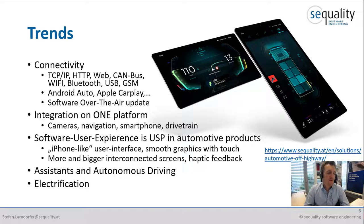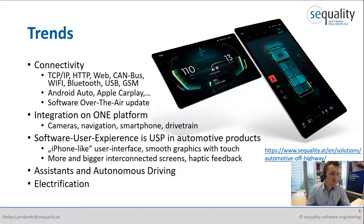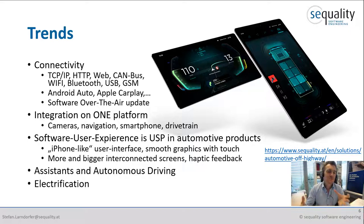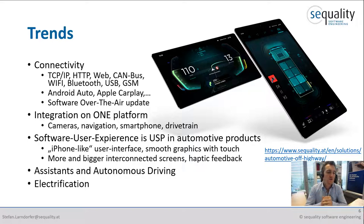You may even want to do software over-the-air updates. All of this plays into connectivity, which is quite an important aspect to consider. And as you want to show all these connections on one display, you need to integrate them on one platform — cameras, navigation, smartphone, phone information from the drivetrain — they all need to be integrated on one platform so you have access from a single platform and can display this on one or several different displays.